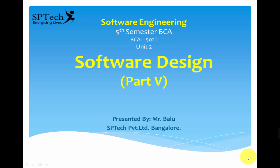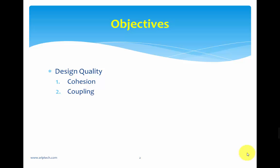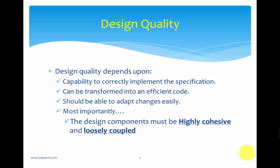Welcome back. This is Baloo. Today's session is part five of software design. We are going to discuss design quality and elaborate upon two important concepts: cohesion and coupling. Before jumping into design quality, let's first define what quality means — quality means customer satisfaction or conformance to requirements.